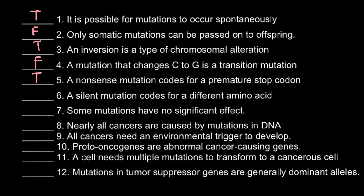A silent mutation codes for a different amino acid — and this is false. We call it a silent mutation because such a mutation doesn't change the amino acid sequence. A different trinucleotide still codes for the same amino acid. This is due to the wobble position number 3 in the trinucleotide — it can be substituted with a different base, for example cytosine with guanine or thymine or adenine, but the trinucleotide still codes for the same amino acid, because only the first two positions typically determine the specific amino acid.